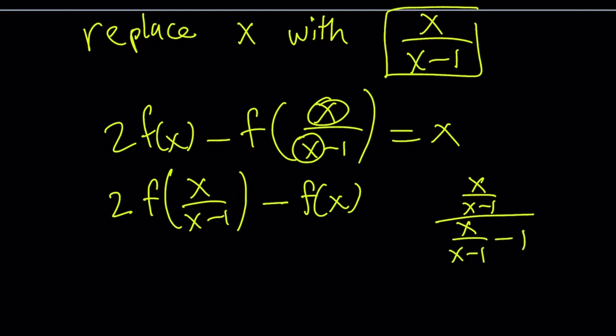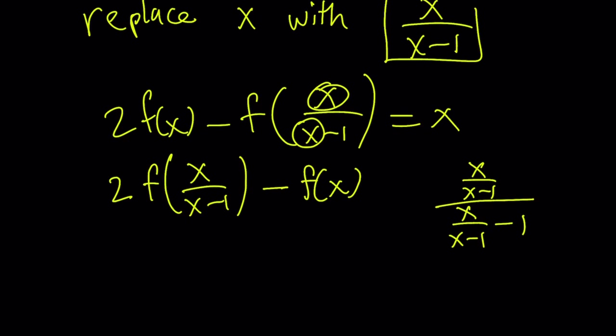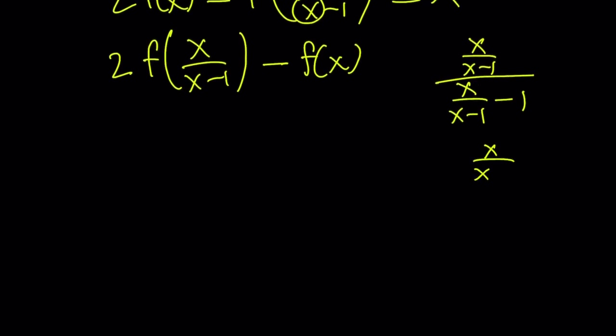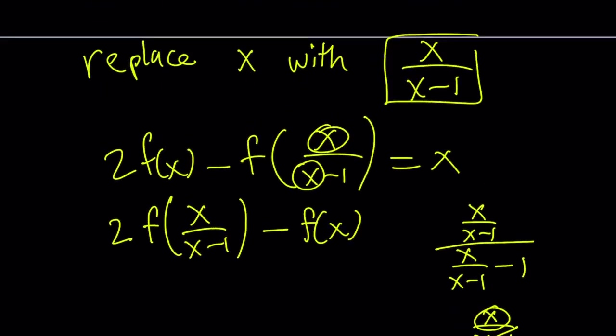Replace x with x over x minus 1 here and here. We can make a common denominator. x over x minus 1 divided by x minus x plus 1 over x minus 1. x minus 1 cancels out, x cancels out, and we end up with x over 1, which is x. That's why this just turns into x.